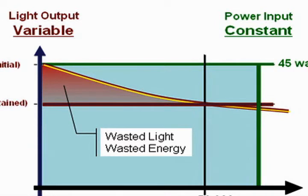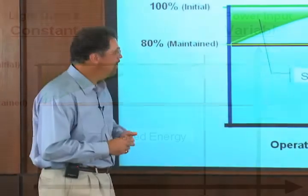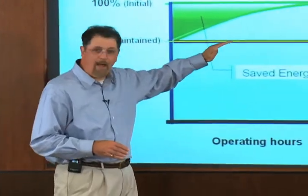Digital lumen management allows us the opportunity now to maintain a constant light level over the entire life of the system. And as the LEDs depreciate, it knows to ramp up the power input to compensate for that depreciation so that a constant level of light is maintained.